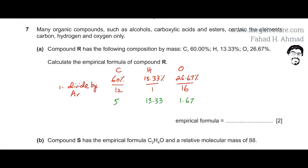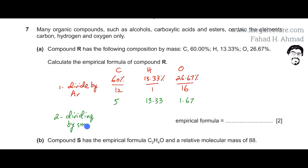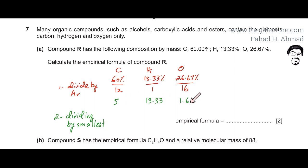Moving to the second part, we find the simplest ratio by dividing by the smallest number out of the three. We want whole number ratios, so we divide by the smallest value. Out of these three values — 5, 13.33, and 1.67 — the smallest is 1.67.